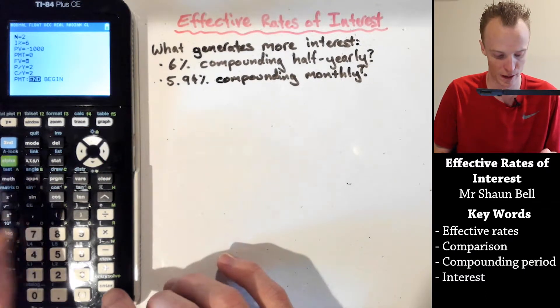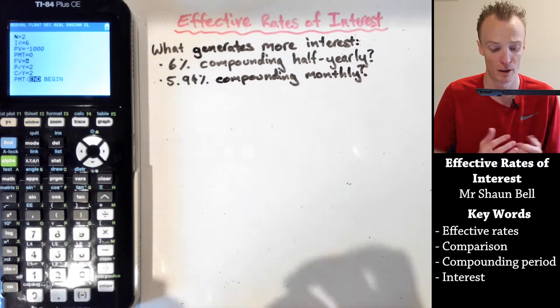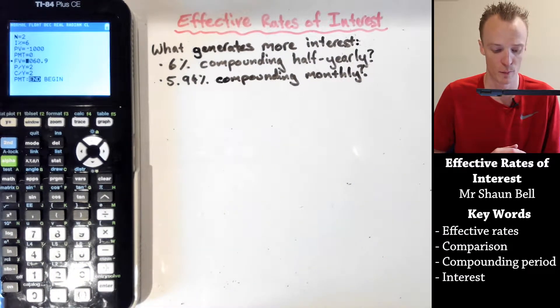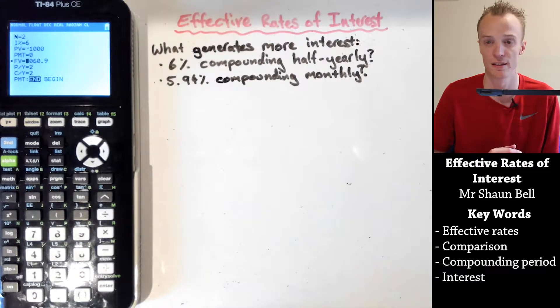Our future value here, if we're doing 6% compounding twice per year, after one year we will have $1,060.90 in our account.